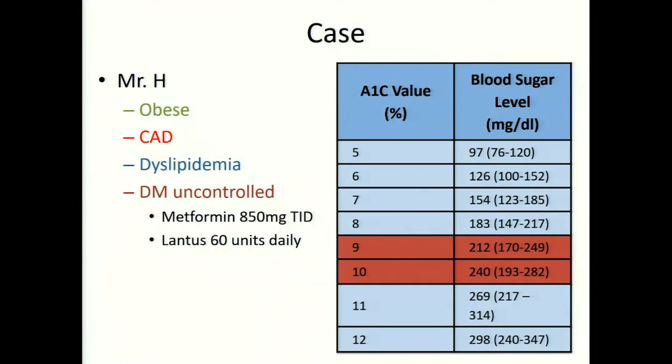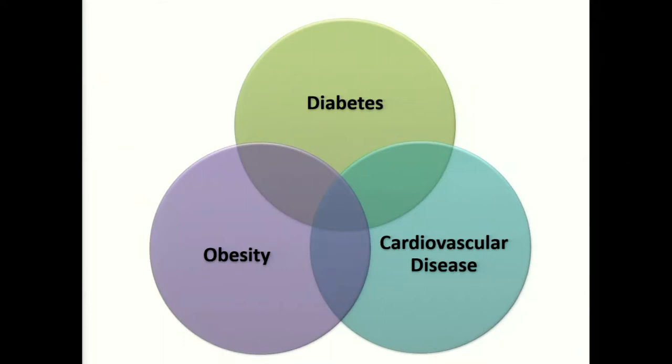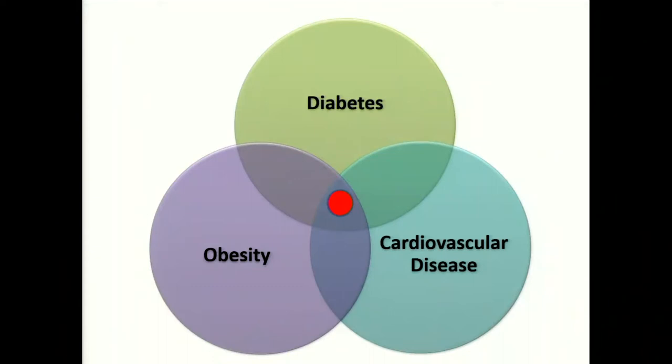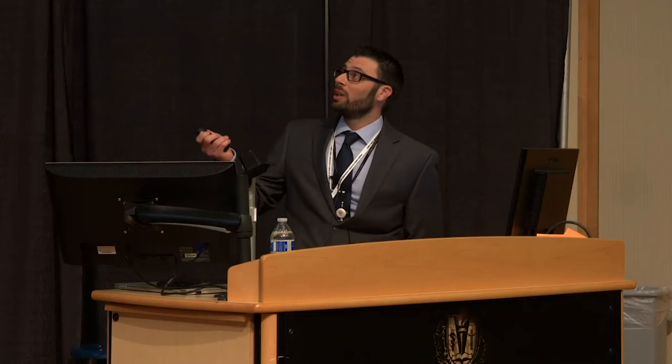Going back to Mr. H — he's obese, has CAD, dyslipidemia, and uncontrolled diabetes. His average blood sugars would be above 200 based on his A1C of 9.8. When we put the unholy trinity together, I try to be a medication minimalist. Patients want one pill that fixes everything. I want to show you some ways we might target all three conditions with perhaps one therapy at a time.